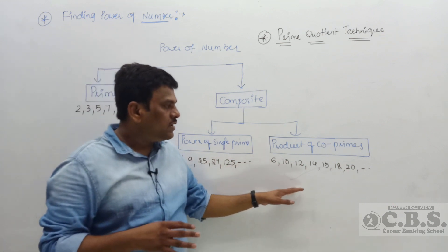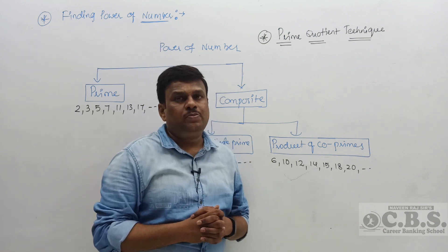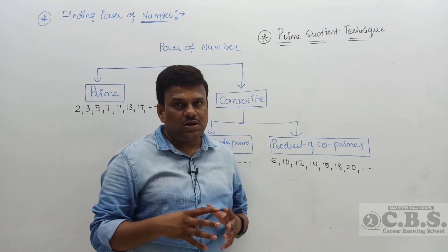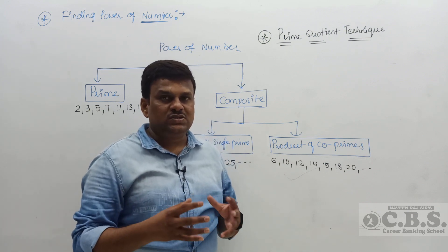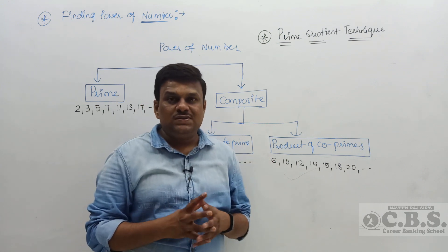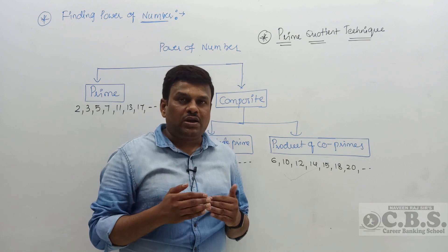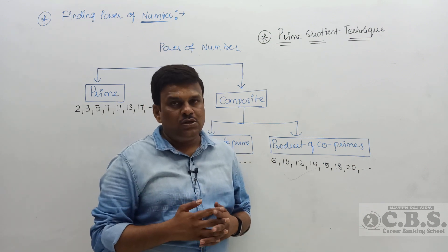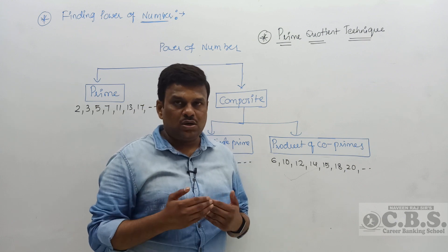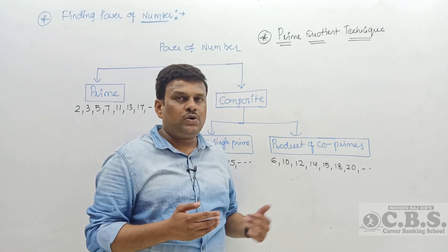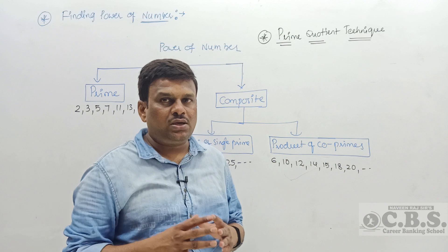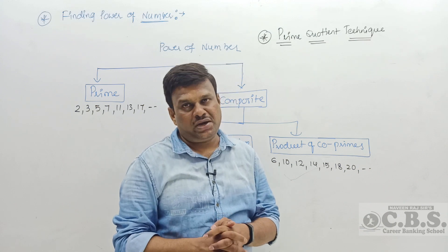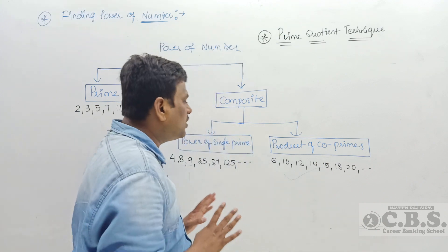The second type of composite is a product of co-primes. Co-primes are two numbers whose only common factor is 1. For example, 6 = 2 × 3, where 2 and 3 are co-primes. Similarly, 10 = 2 × 5, 12 = 3 × 4, 14 = 2 × 7, 15 = 3 × 5, 18 = 2 × 9, and 20 = 4 × 5. So in total there are three types of models we are going to discuss in this topic.